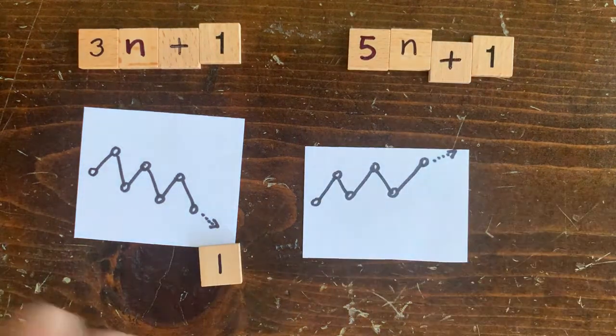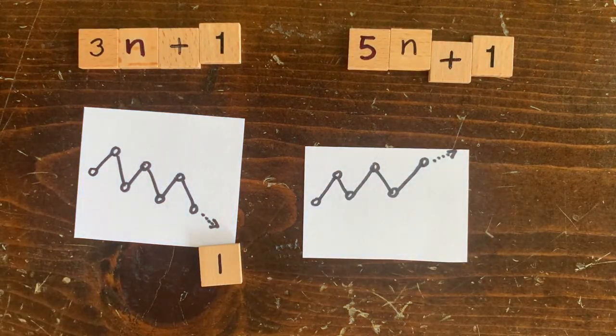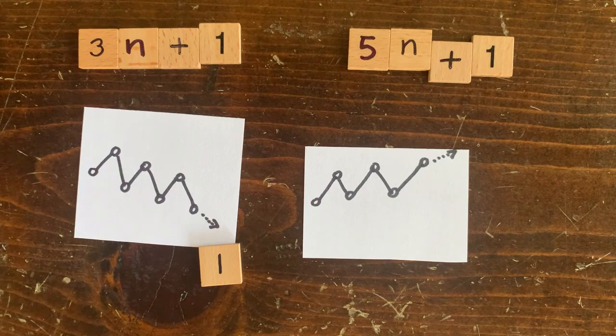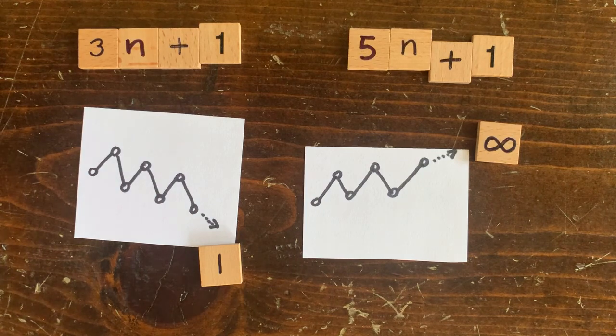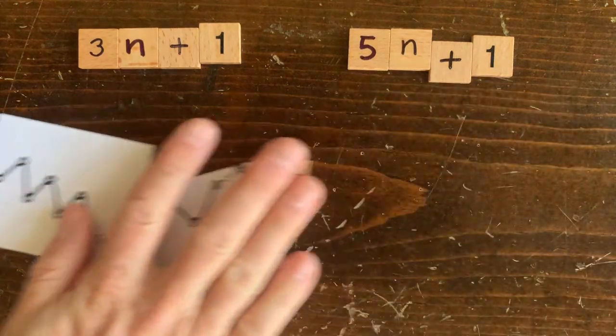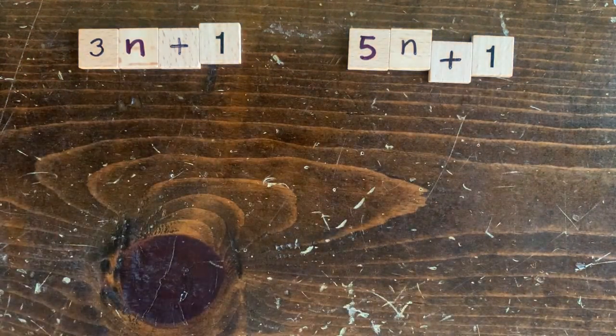5n plus 1 sequences, on the other hand, trend upwards because 5 is a bigger multiplier. But nobody knows for sure if any of those numbers truly diverge to infinity. Probably they do. For this episode, though, let's focus on loops, especially circuit loops.